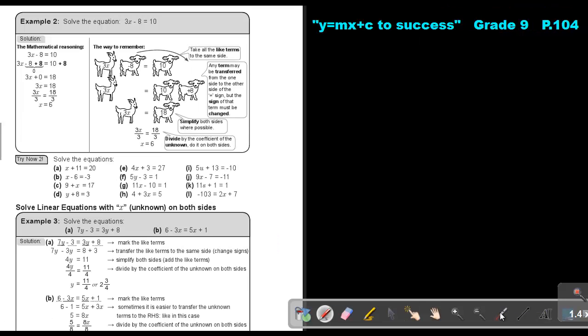Let's look at an example. Solve the equation 3X minus 8 equals 10. So basically, what we are going to do is we want to get the like terms on the same side. First, let's look at this method.